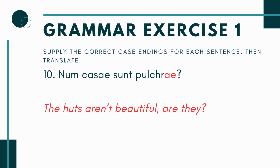In the last one, number ten, we have the third type of yes or no question: num. Num functions similarly to nonne, but instead of expecting yes, I'm expecting a no. So when I have num cassae sunt pulcrae — ignore the num for now — the main phrase is cassae sunt pulcrae, that the huts are beautiful. Since cassae is plural, pulcrae will be plural; you have the verb to be, so it's nominative plural on each side. With num, you translate it as: the huts aren't beautiful, are they? You're expecting the answer to be no.